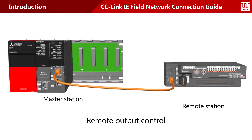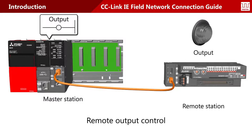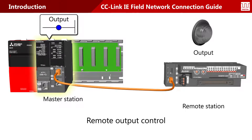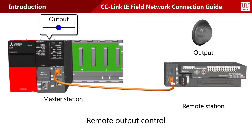As an example of remote output control, when a sequential circuit coil turns on, the state change is sent over the network, and the corresponding lamp on the remote station turns on.